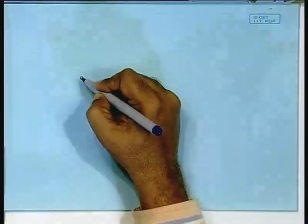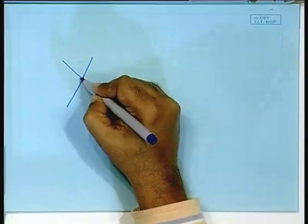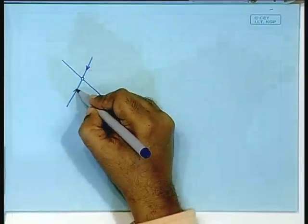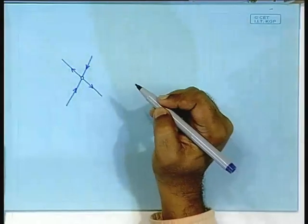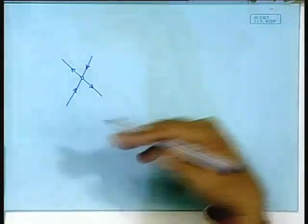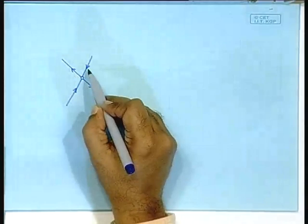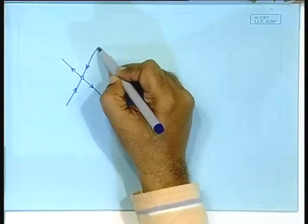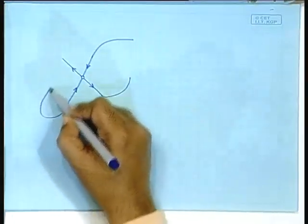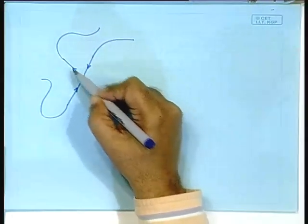In the last class, we were talking about the saddle fixed points and we have seen that there can be eigenvectors which would be the stable and the unstable eigenvectors locally. But if you look at the rest of the system — the state space outside the immediate neighborhood of this fixed point — you will find that these lines are all bent. It can be all sorts of possible ways they can bend, and we said this is the stable manifold and this would be the unstable manifold.